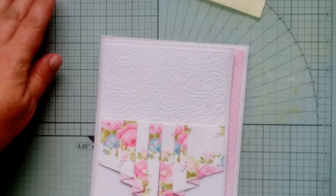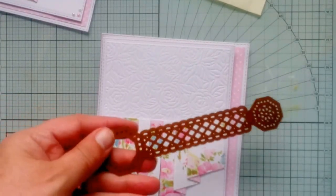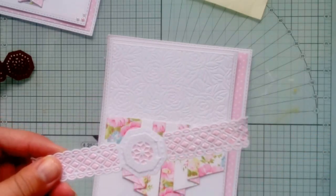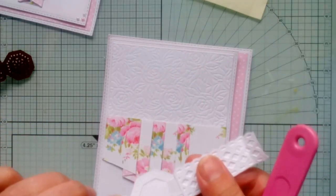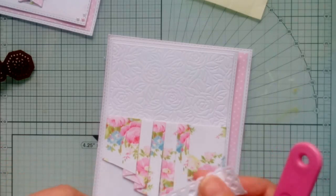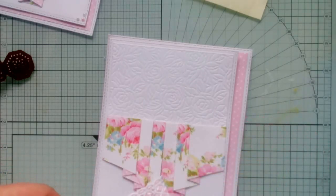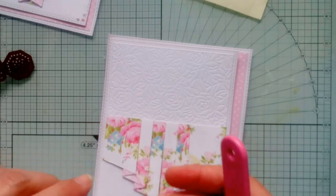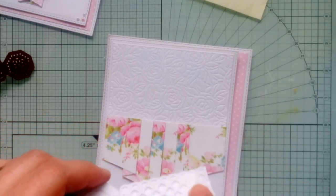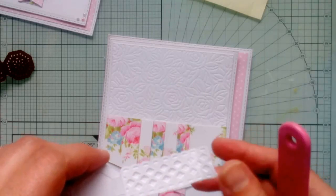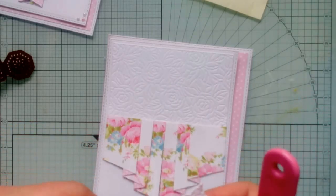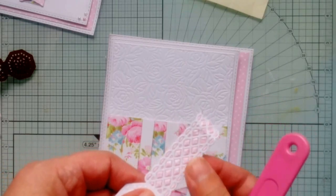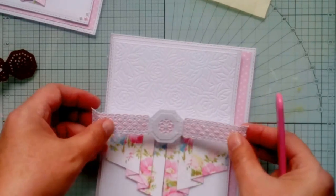So I stuck that on there, and then I took the scallop lattice buckle bar die from Creative Expressions also. And so I die cut that in the same white card as I'd used for my base. And I took the reverse polka dot side of the decorative card, and before I embossed it, before I run the buckle bar through the embossing sandwich of the machine, I placed a little piece of the pink polka dot card onto the reverse and then put it through the embossing sandwich. And if you can see, it pushes through your decorative card through the little lattice pieces and just sort of creates a bit more interest.